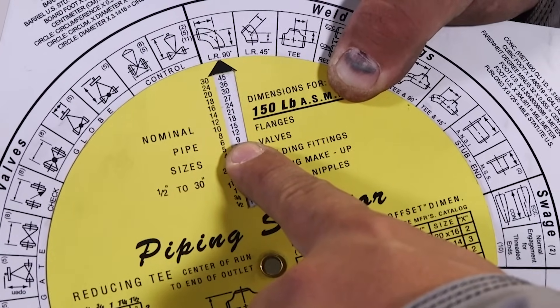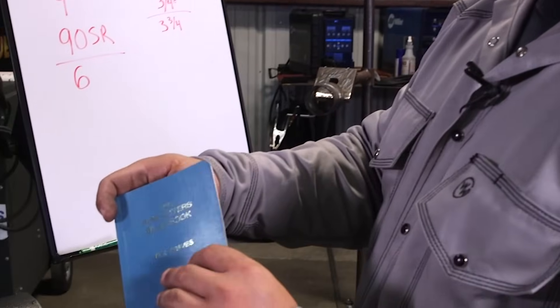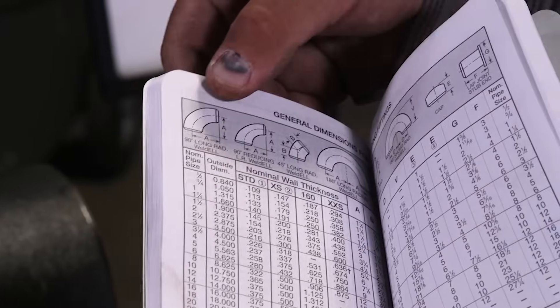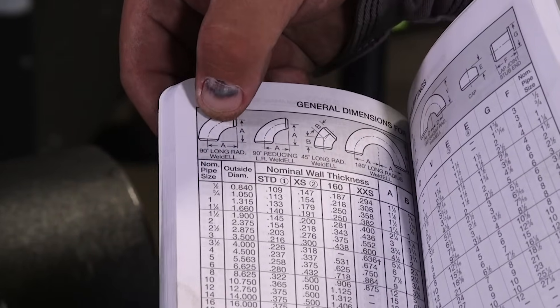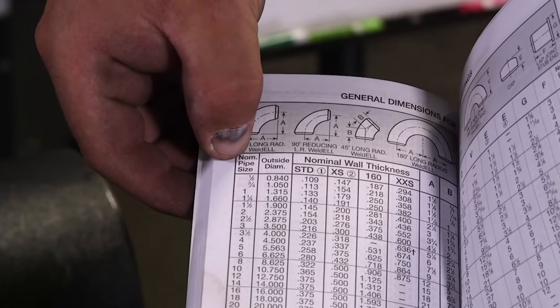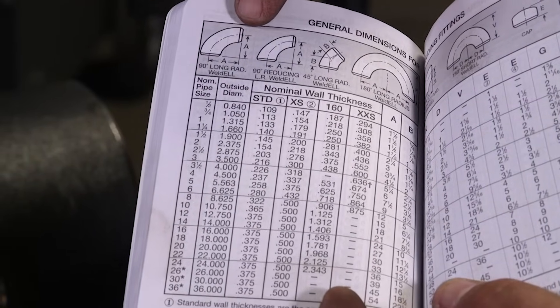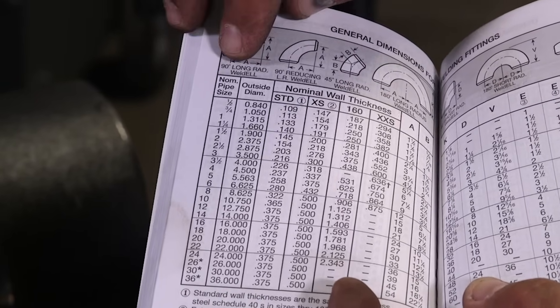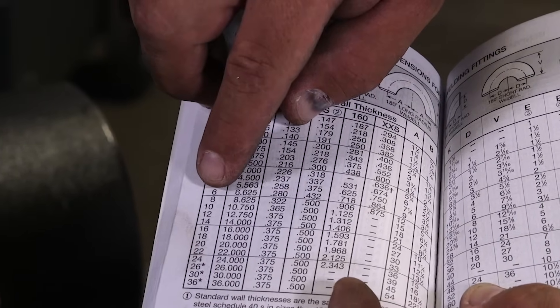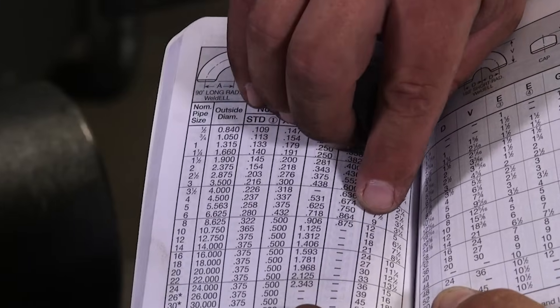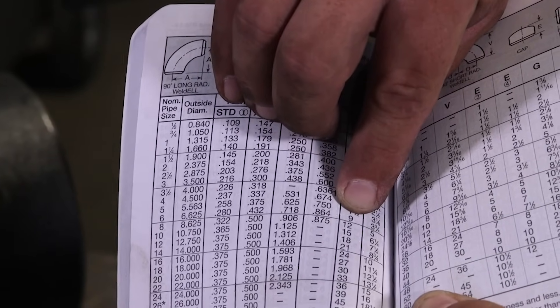Alright guys, so on this pipe fitter blue book, you turn to page 95. You can see here, again we have our long radius 90. You go right here to nominal pipe size, you go down to 6. You can see on our drawing here, it says to go to A to get our takeoff. You can go all the way down until you get to A. It's also 9 inches.